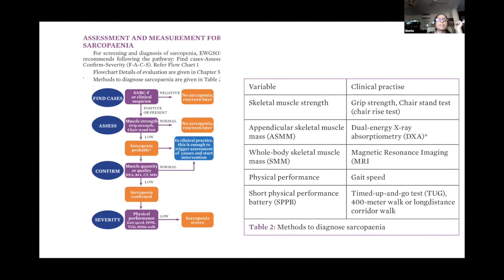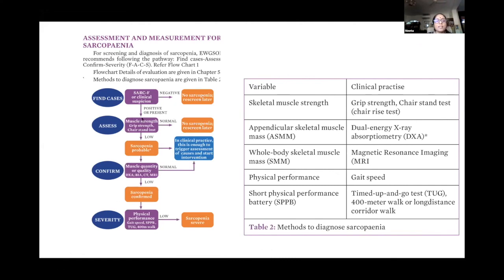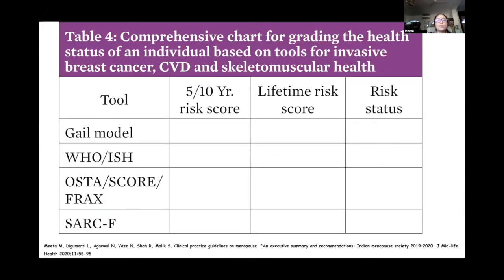We should not forget sarcopenia — five simple questions can be asked as a case-finding strategy: whether she can walk, get up from a seat, climb stairs, and similar questions. If anything is positive, assess muscle strength further, and proceed to additional tests if needed.